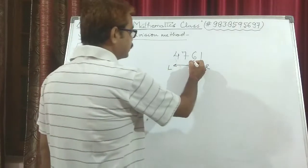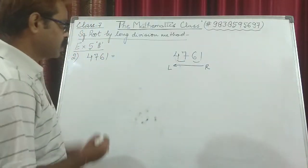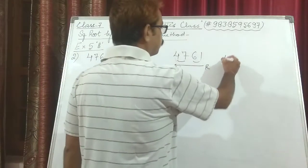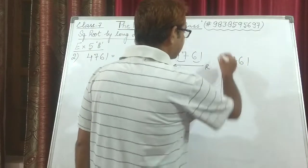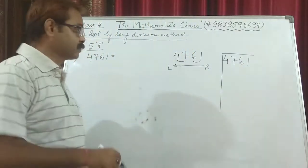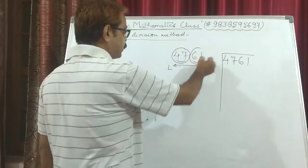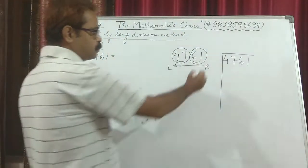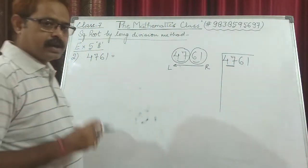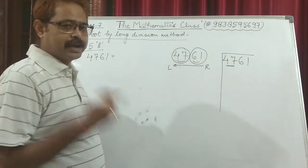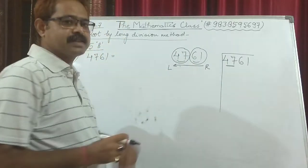The numbers are paired like this: 61 is one pair, 47 is one pair. We will consider the numbers in pairs. The first pair is 47. We need to find a number which when multiplied by itself is equal to 47 or less than 47, as we do in division.